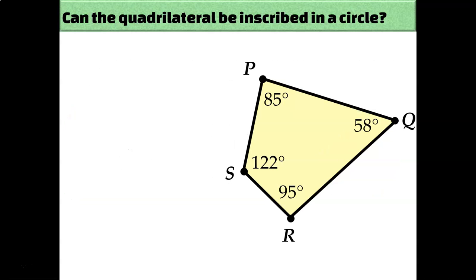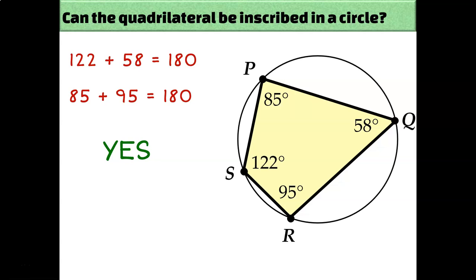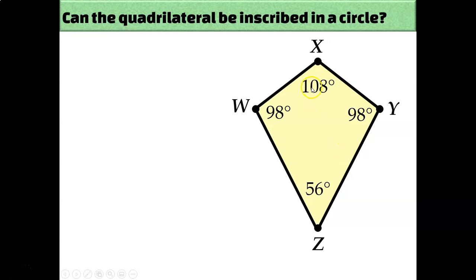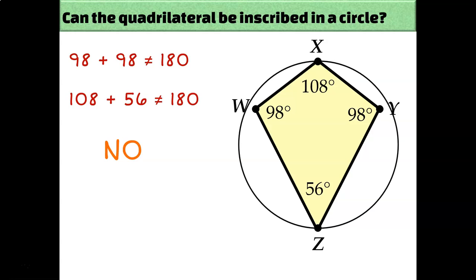Let's try some examples. Can this quadrilateral be inscribed in a circle? We need opposite angles to sum to 180. Check: 122 plus 58 equals 180, and 85 plus 95 equals 180. So yes, this quadrilateral can be inscribed. Let's try another. For this quadrilateral: 98 plus 98 is not 180, and 108 plus 56 is also not 180. So it's not possible to inscribe this quadrilateral in a circle.